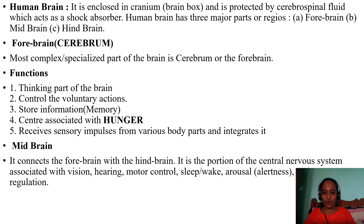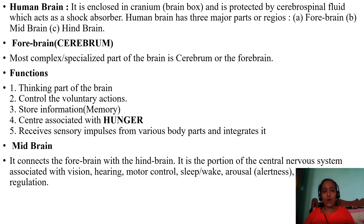The human brain has three major parts: forebrain, midbrain, and hindbrain. Under the forebrain, the main part is the cerebrum, which covers 80 percent of the brain. The most complex and specialized part of the brain is the cerebrum. Its functions include thinking — the cerebrum is the thinking part of the brain — and it controls voluntary actions.